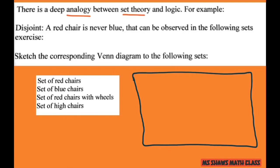So if we do a little Venn diagram, we can do a disjoint thing where a red chair is never blue. And we're going to sketch the corresponding Venn diagram to this following set.